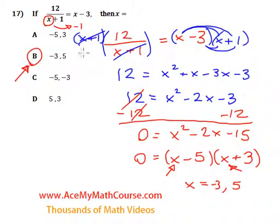Neither of them conflict with the negative 1, that is the non-permissible value of x. So we're good. Negative 3 and 5.